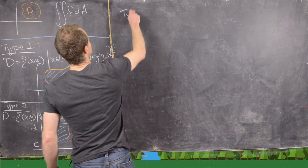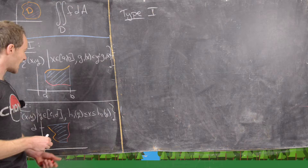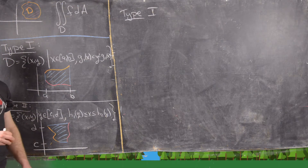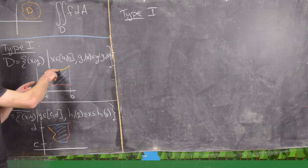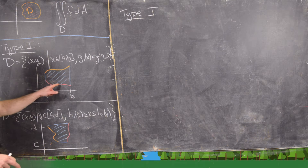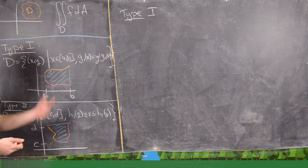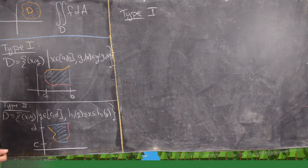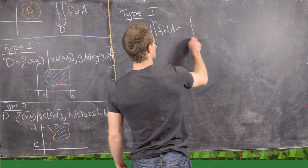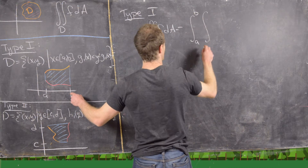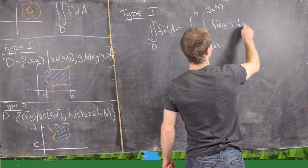Now we want to set up the iterated integral for each of these cases. For a Type 1 region, the double integral over d of f dA equals the integral from a to b on the outside, and from g1(x) to g2(x) on the inside, of f(x, y) dy dx. For a Type 2 region, it equals the integral from c to d on the outside, and from h1(y) to h2(y) on the inside, of f(x, y) dx dy.